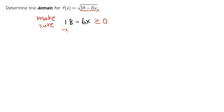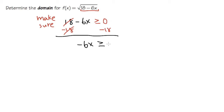Let me subtract 18 on both sides so that they cancel. We will have negative 6x, and because we subtracted 18 on both sides, the inequality states greater than or equal to 0 minus 18, which is negative 18. Then we are going to divide both sides by negative 6 so that the x will be by itself. Negative 18 divided by negative 6 gives us positive 3.